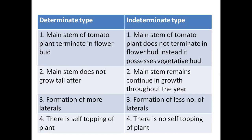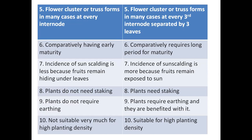In determinate types, the main stem does not grow tall and more lateral branches are formed — the plant becomes bushy. In indeterminate types the main stem continues to grow in height, so formation of fewer laterals occurs. Determinate types are also called self-topping or self-pinching variety plants, whereas indeterminate types are called non-self-topping or non-pinching plants.